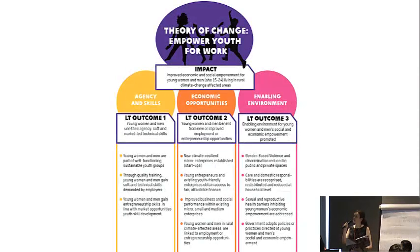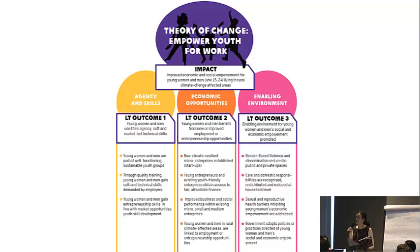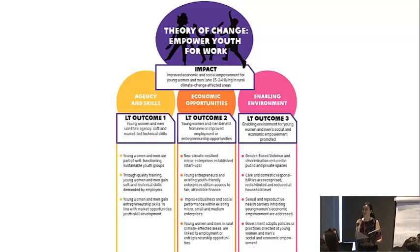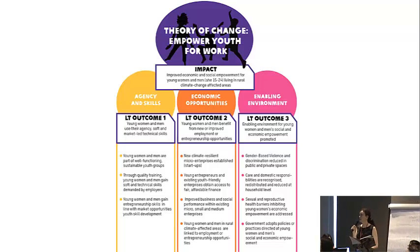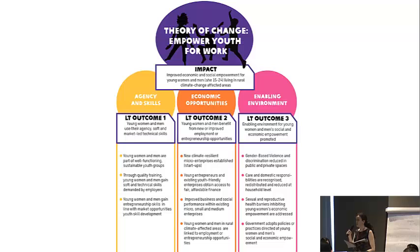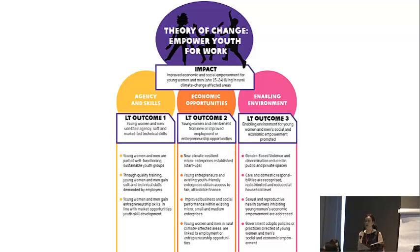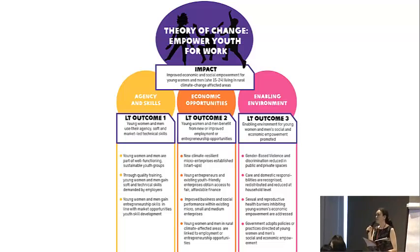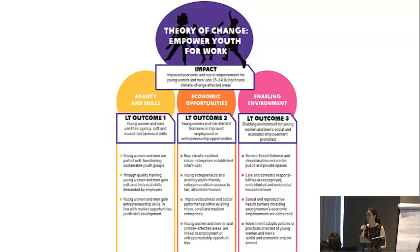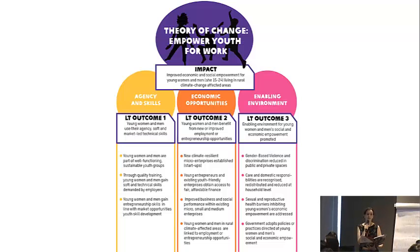The programme framework underpinning Empower Youth for Work has three key pillars. The first is around improving young people's agency and skills. The second is around developing economic opportunities for young people. The third, most relevant to this piece, is about building an enabling environment. This is where we saw interest in social norms and the economy, especially the role young people can play as active citizens in awareness raising, influencing government decision makers around laws and policies, and interacting with a variety of different stakeholders.